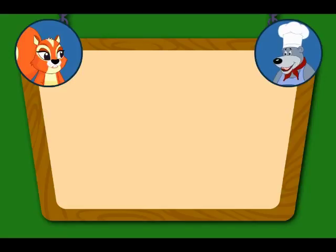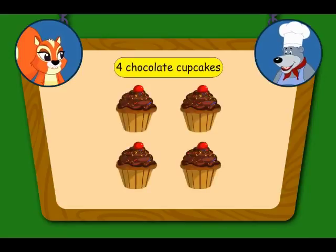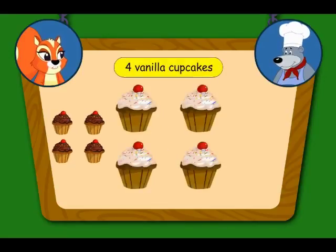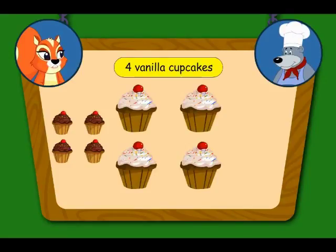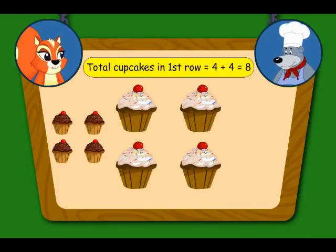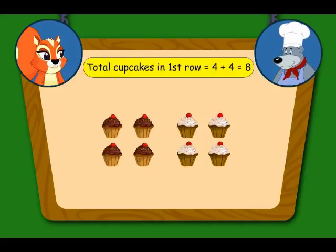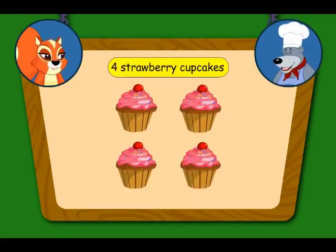So the total number of cupcakes in the first row are four plus four, which gives eight. In the row below, there are four strawberry cupcakes and four lemon cupcakes.